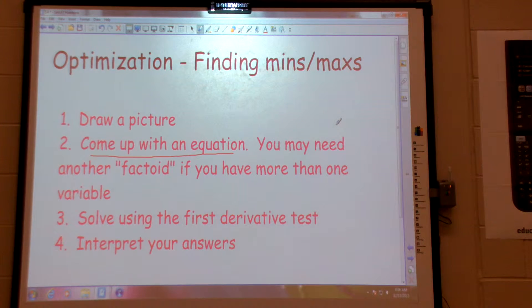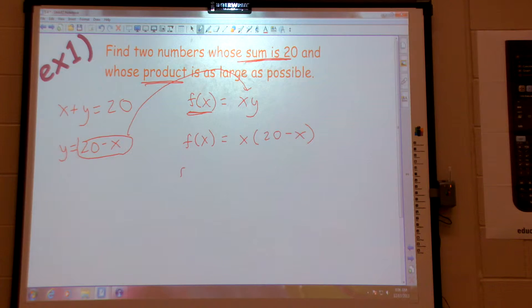Now that I have a function, I've come up with an equation, I've eliminated the variable, I need to use the first derivative test. So I'm going to go ahead and distribute that so I don't use the product rule. That is 20x minus x squared. So its derivative is 20 minus 2x.